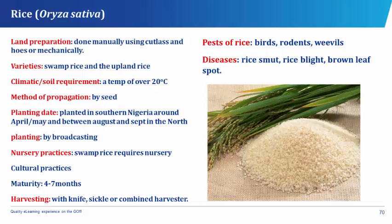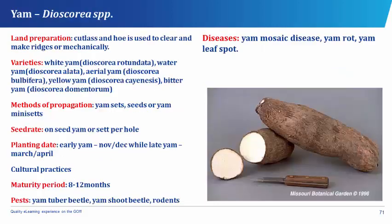Pests that attack rice are the birds, the rodents, and the weevils. Diseases suffered by rice are the rice smut, the rice blight, and the brown leaf spot.